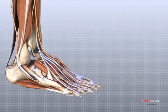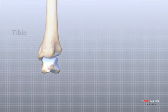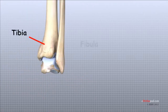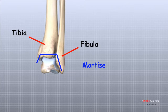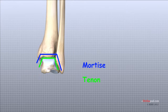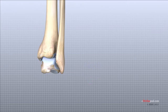The ankle joint is sometimes referred to as a mortise and tenon joint. The two bones of the lower leg, the large tibia and the smaller fibula, come together at the ankle joint to form a structure known as a mortise. One of the larger bones of the foot, the talus, forms the tenon of the ankle joint by fitting into the mortise formed by the tibia and fibula. This mortise and tenon structure is well known to carpenters and craftsmen, and the arrangement is very stable.